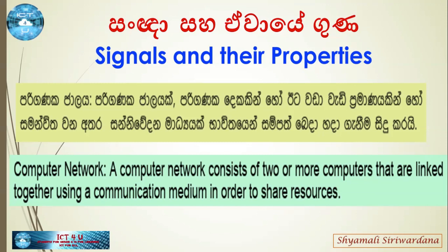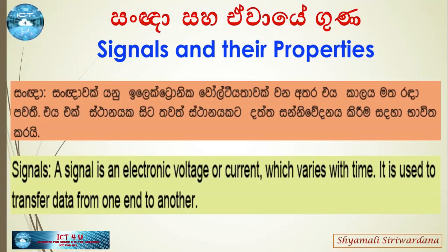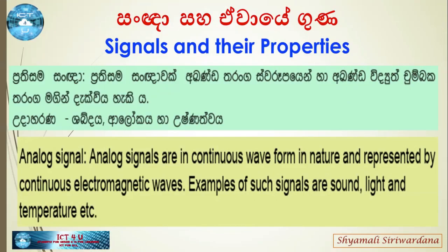Devices are linked together using a communication medium in order to share resources. This is the main point of networking — sharing resources. In order to get a signal, the electronic voltage or current which varies with time is used to transfer data. One type is the analog signal.